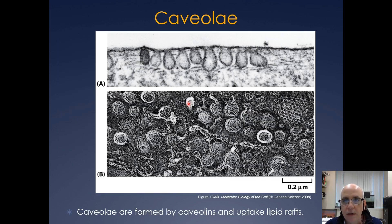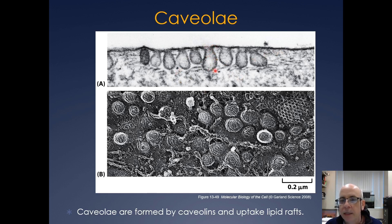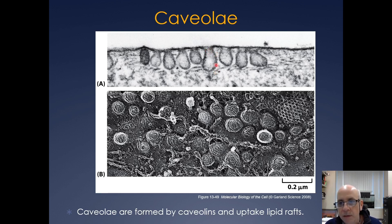You also have caveolae, which form on the plasma membrane as well. These are formed by caveolins and tend to take up lipid rafts. In receptor-mediated endocytosis, you can package receptors into these vesicles, and then they can either be recycled or transported to the lysosome, or they can go back to the plasma membrane if needed.